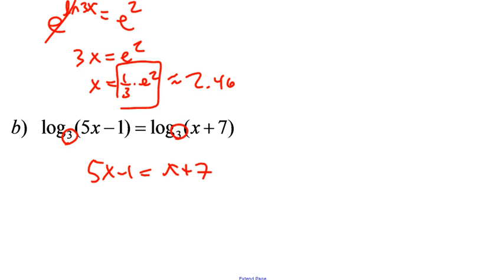That should make sense because we're doing the one-to-one property, right? Remember that property where we said, if I had log of X equals log of Y.